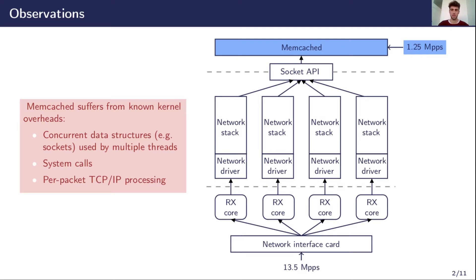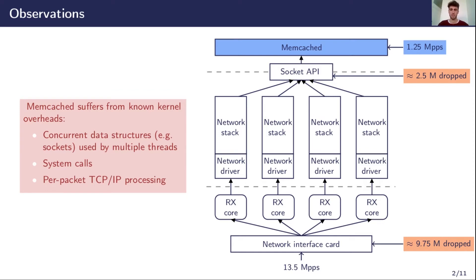Even though Memcached SR is able to process 1.25 million requests per second, we observed that it is not enough to deal with high network workloads. This is because incoming requests still have to go through the entire network stack before they are received and processed by the application. The network stack adds too much overhead to process every packet received by the NIC hardware. As a result, socket and hardware queues fill up and new packets are dropped.